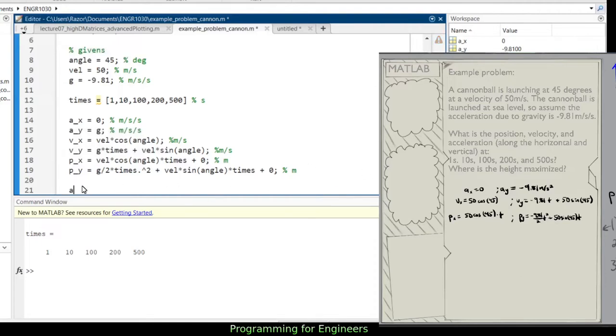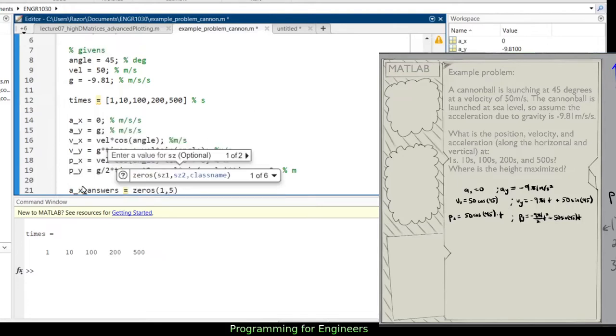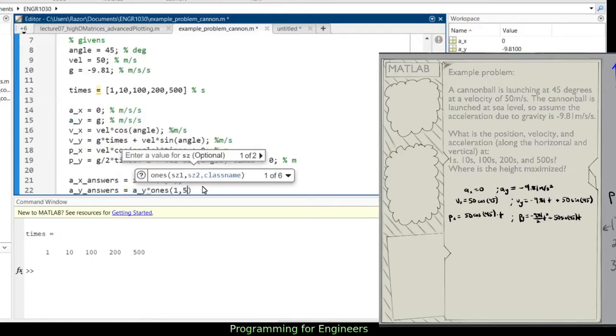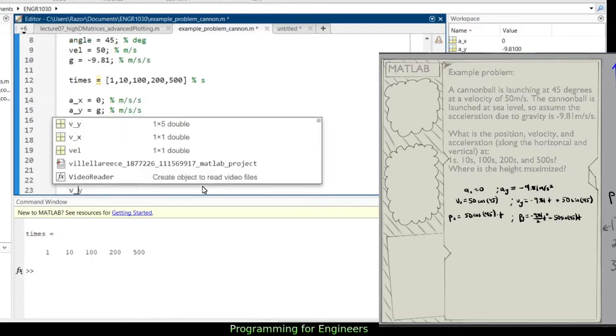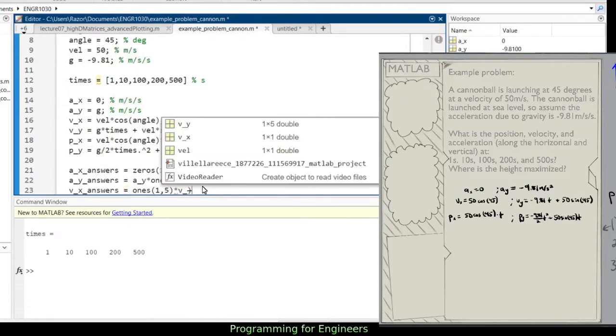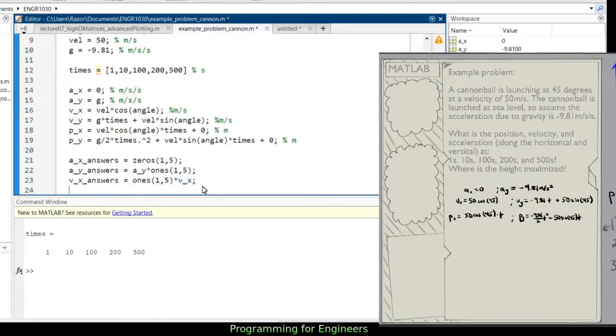So to get those, let's say ax answers is zeros, one row, and five columns, because it's zero for each of those times. Ay answers is ay times ones of 1, 5. Then my vx answers is ones of 1, 5 times vx.